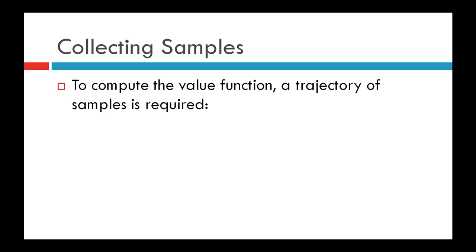The first step in any reinforcement learning problem is to collect samples. Our task is to compute either the value function or policy. To compute the policy we need the value function, and to compute the value function we need samples. A trajectory of samples is required — it may be a single trajectory or multiple trajectories, depending on how accurate you want to solve the value function approximation problem.